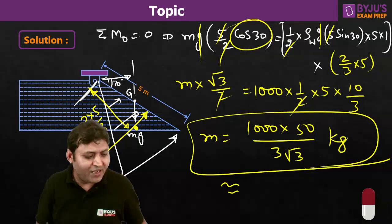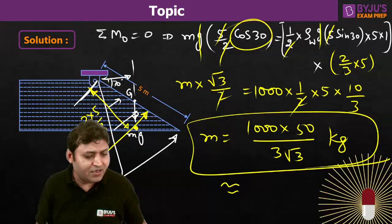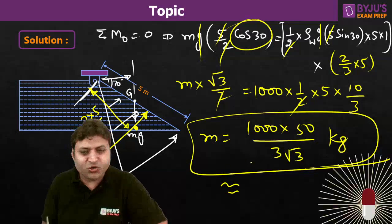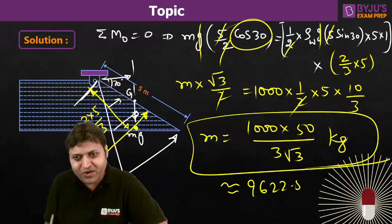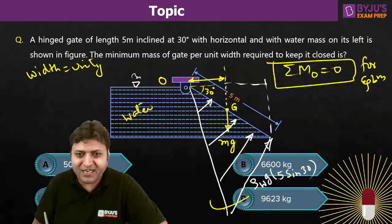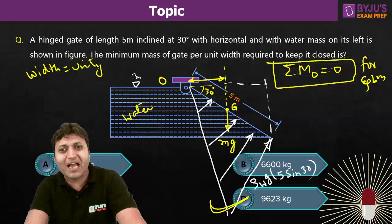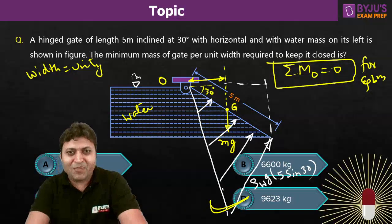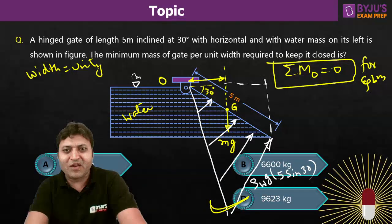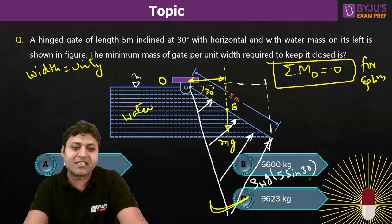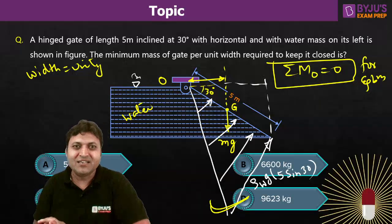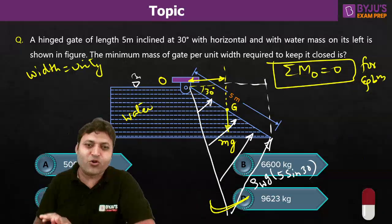3050 divided by 3 gives 9622. So option C is the correct answer. That is all from my side for this episode. I will bring more such beautiful concepts in the next session. Thank you very much.